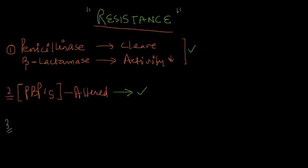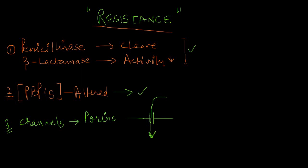The third resistance mechanism is via alteration in the channels that transport penicillin from outside to inside the cell. These channels are called porins. Penicillin normally passes through these porins into the cytoplasm to bind with the penicillin binding proteins. In some bacteria, an alteration has occurred in these porins, so penicillin is not able to enter the cell and exert its action — therefore there is resistance.